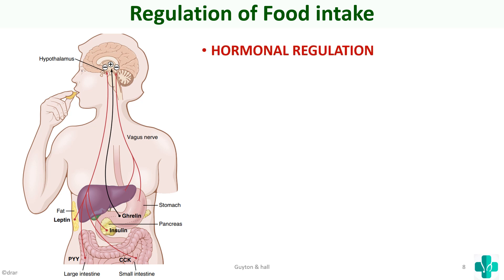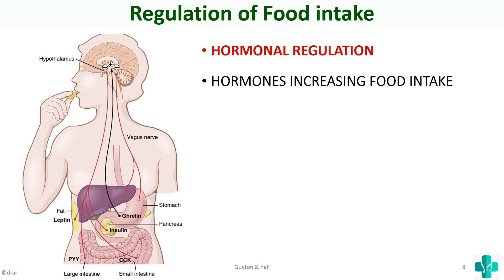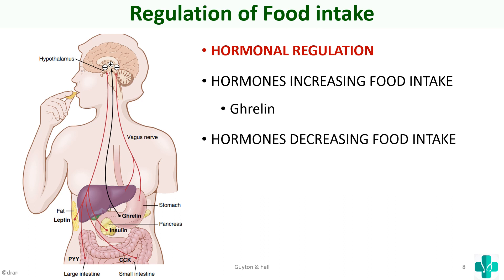Moving on to hormonal regulation — the different hormones related to regulation of food intake can be classified into two groups: hormones that increase food intake (ghrelin) and hormones that decrease food intake (leptin, insulin, peptide YY, and CCK or cholecystokinin).